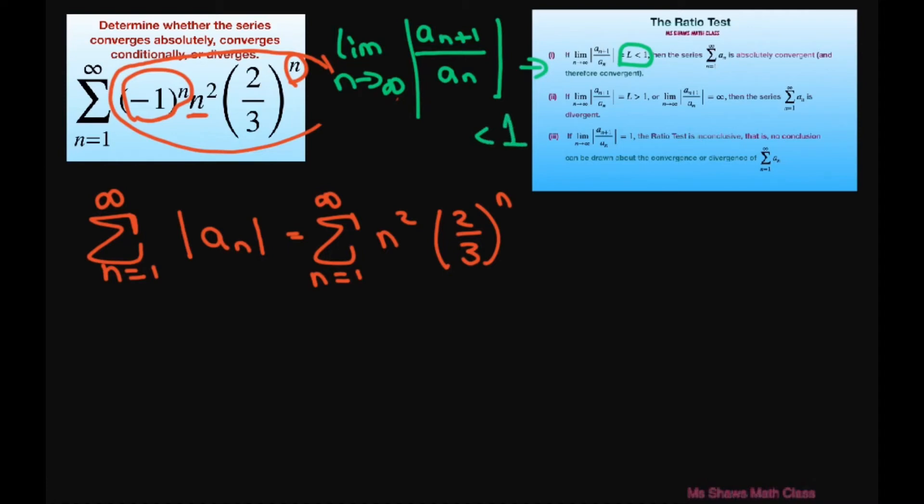So let's see what we get. Let's do substitution. We're going to get the limit as n approaches infinity of n plus 1 squared times 2 thirds to the power of n plus 1 divided by n squared times 2 thirds to the power of n.